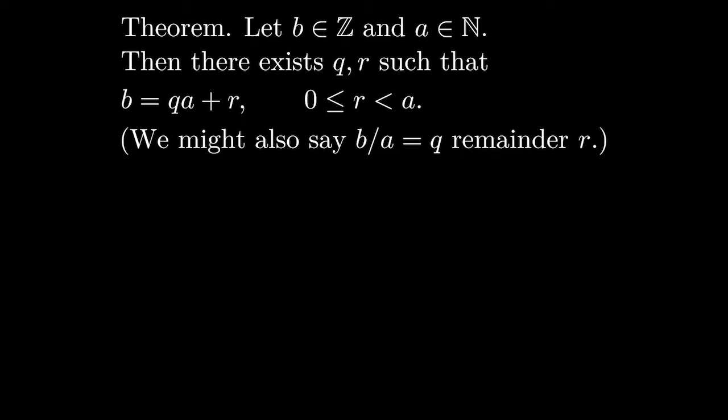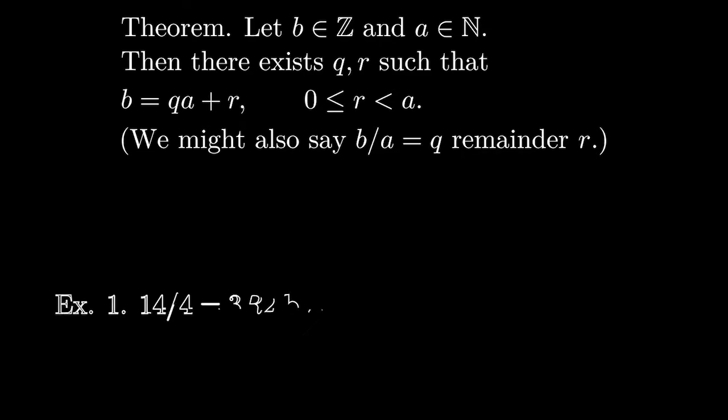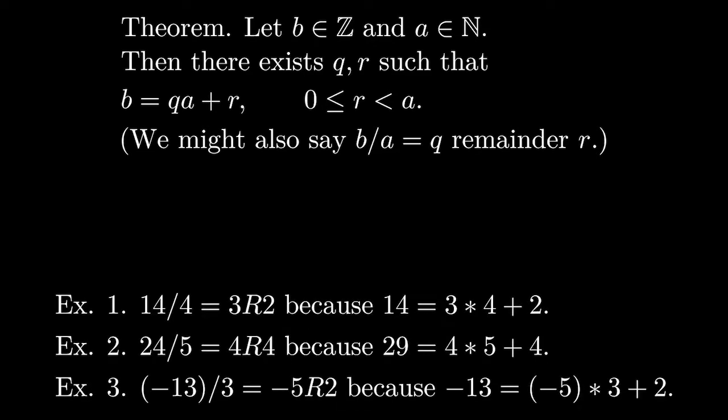Okay, so some examples. 14 divided by 4 is 3 remainder 2, because 14 is 3 times 4 plus 2. 24 divided by 5 is 4 remainder 4, because 24 is 4 times 5 plus 4. Minus 13 divided by 3 is minus 5 remainder 2, since minus 13 is minus 5 times 3 plus 2. Note that the negative numbers are maybe strange and not quite what you expect, and that's because we always pick the quotient so it's less than the number so that the remainder is not negative.